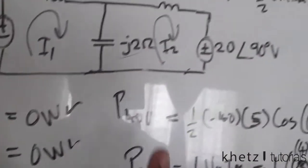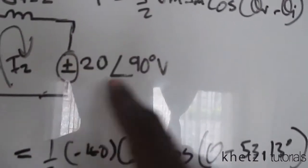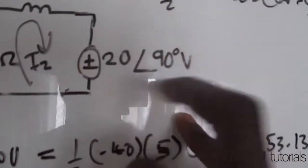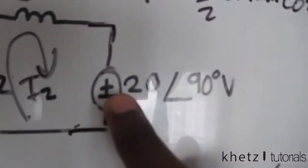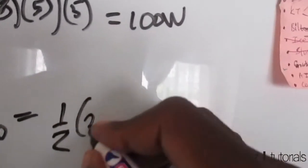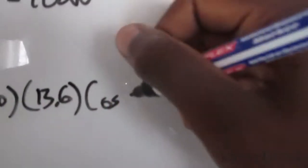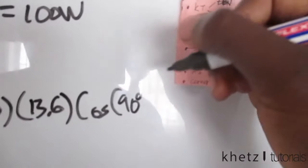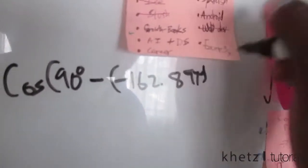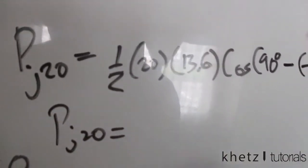We now have four of the five elements done. For the j20 voltage source, i2 flows through its positive terminal first, so we take it as is. The amplitude is 20 V, the current amplitude is 13.6 A, and we compute: P = (1/2)·20·13.6·cos(90° − (−162.897°)). Punching this into the calculator gives an absorbed power of −40 watts.